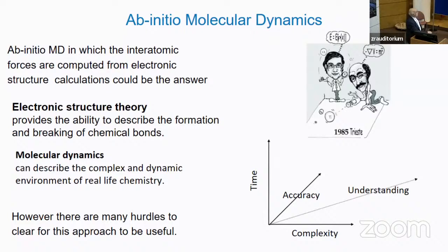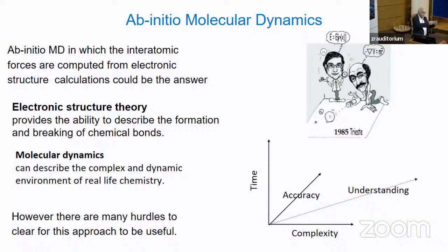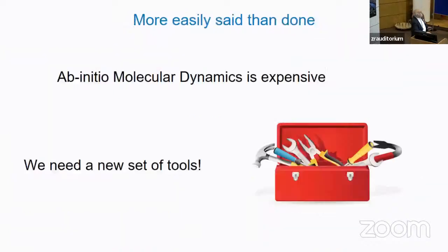The theoretical tool for studying this is ab initio molecular dynamics, which we developed a long time ago with Roberto Car when we were much younger. In this scheme, you combine molecular dynamics — because atoms move — with ab initio calculation, because you want to describe these chemical processes where bonds are broken. However, if we try to apply this method, however useful and powerful, we couldn't directly have done the simulation I've shown you. It's an expensive enterprise, and one needs a new set of tools to address this.